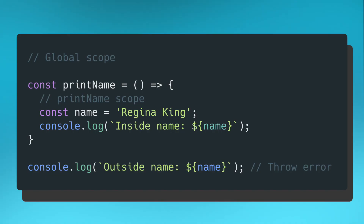The second scope is your local scope. Any variable or function that's defined inside of another function is bound to that local scope, meaning certain variables and methods don't have access to the internal data defined in other functions. So if we create a function with variables and methods inside it, anything outside of that function doesn't have access to the internal data. Going back to the code block, I moved my name constant into the print name scope — I can still print Regina King inside print name, but trying to reference name outside of print name will throw a reference error.